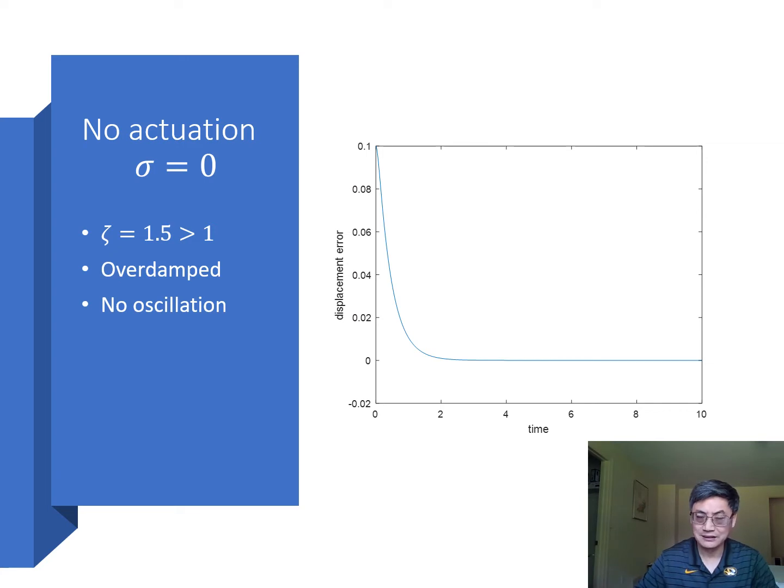I deliberately selected a situation where the damping ratio ζ is 1.5. We know that ζ equals 1 represents the so-called critical damping. For ζ above 1, we have an over-damped system. So the system returns to equilibrium without any oscillations.